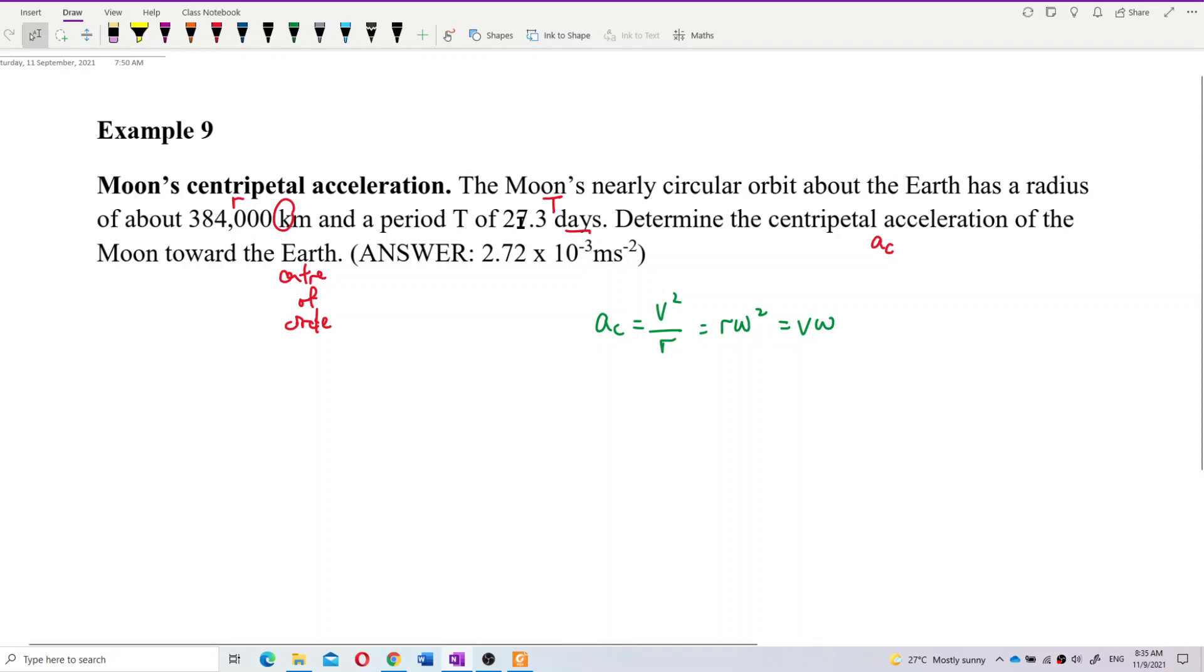We just have to change all to SI unit, the radius, the period, all to SI unit. Then the period, we can find omega using 2π, omega equal to 2π over T. Then problem solved, okay? Okay, first of all, let's find the omega. We don't have the omega. So omega is, but no, we need to change the period into seconds first, into SI unit.